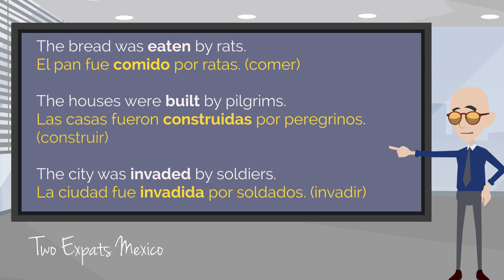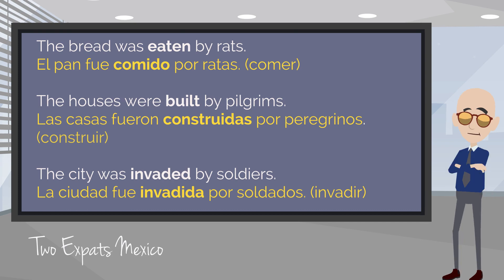Take a look at these sentences I put up here on the board. The past participle is shown in bold in both the English and Spanish translation. The bread was eaten by rats — 'eaten' would be the past participle. In Spanish: El pan fue comido por ratas. Comido would be the past participle of comer, which means to eat. In this sentence, which is in the passive voice, the past participle needs to agree in number and gender with the noun. Since it's el pan — masculine singular — that's why it's comido.